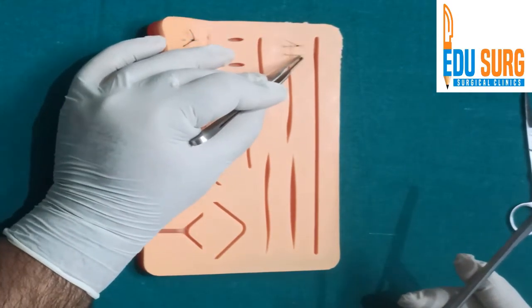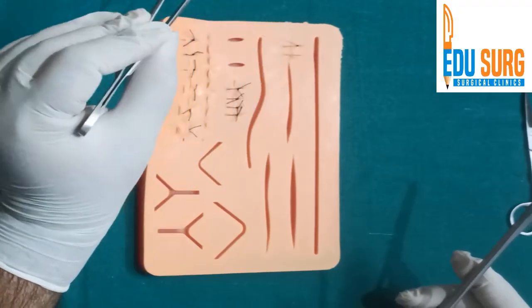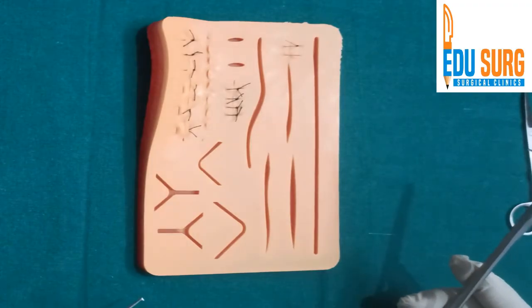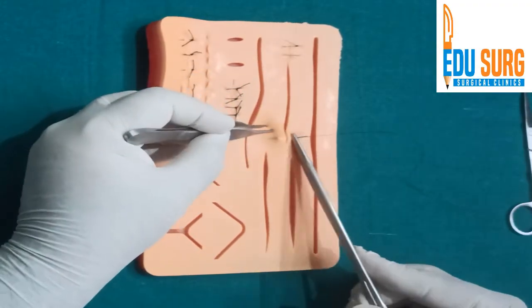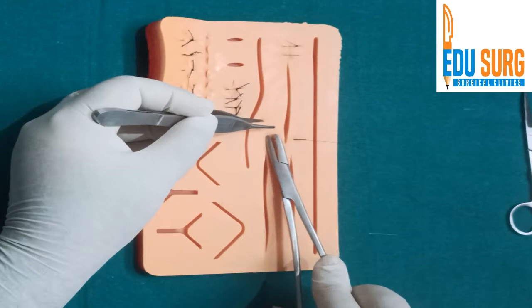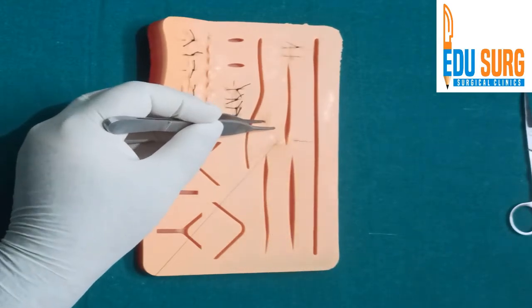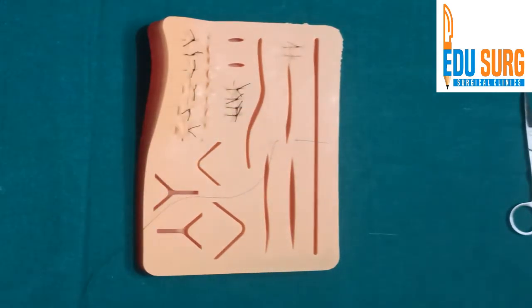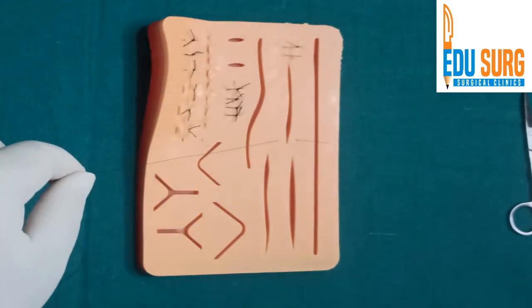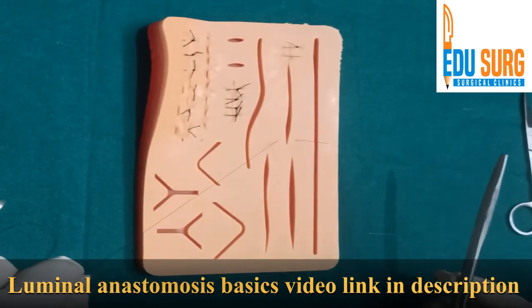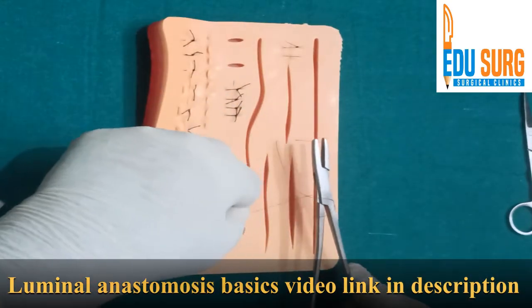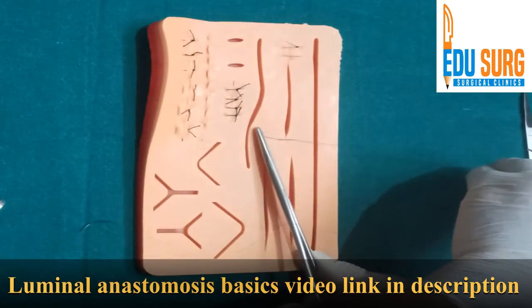Outside in, inside out. Outside in, inside out. Now this same stitch you can take continuous. And if you want to do that, take your last posterior stitch. So if this is your last posterior stitch on the intestine. Don't worry, if you have not understood the intestinal anastomosis, we have a video on it.